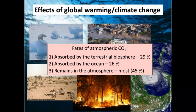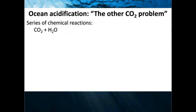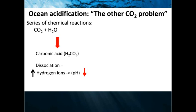The oceans have absorbed 30% of atmospheric carbon dioxide since the start of the industrial period. Ocean acidification is really called the 'evil twin' of global warming. When carbon dioxide ends up in the ocean, it forms a series of chemical reactions: CO₂ combines with seawater to produce carbonic acid, which then dissociates mostly into bicarbonate ions. Bicarbonate ions are very important to understanding what ocean acidification really is.